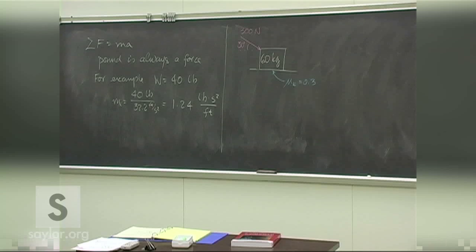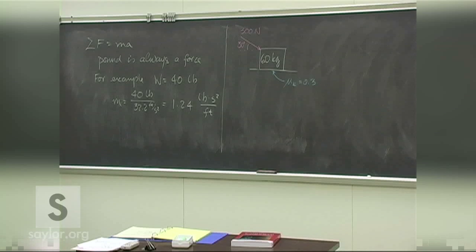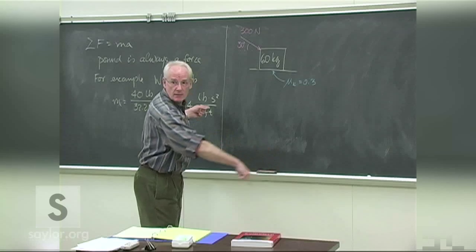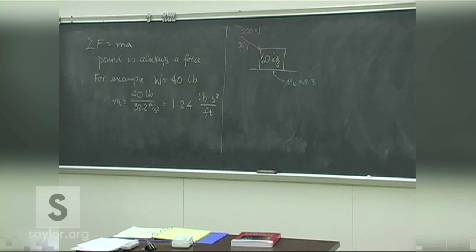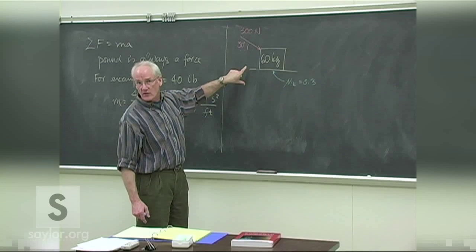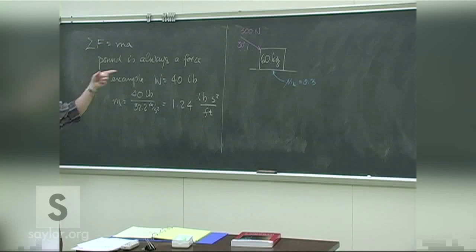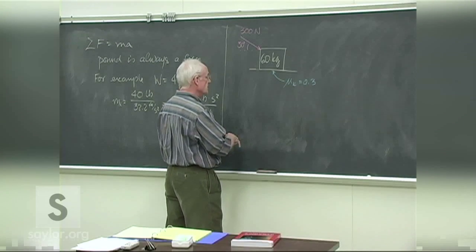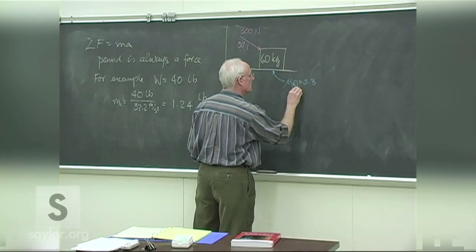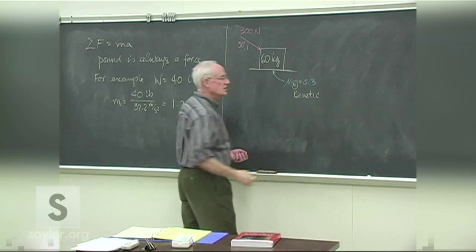What does the subscript K mean in this problem? It means the surfaces are moving relative to each other — kinetic friction. The box is sliding over the surface. Whether the surface itself is moving, we don't know yet, but the key point is that the two surfaces are slipping over each other. That's why we have K for kinetic here, meaning the two surfaces are in motion relative to each other.